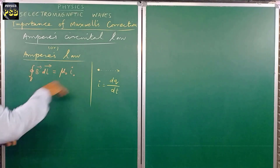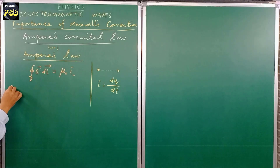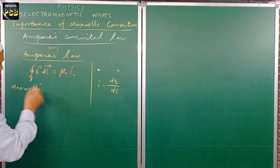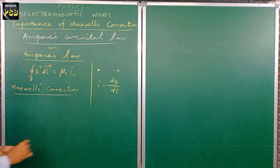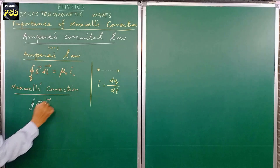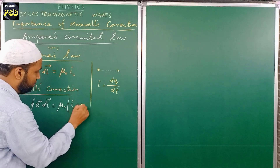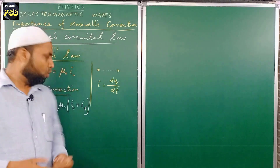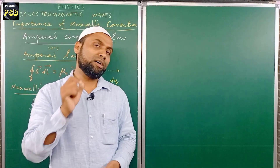This law was modified by Maxwell, and the modification is known as Maxwell's correction. Maxwell introduced a new term, replacing I-naught with I-c plus I-d, where I-c is the conduction current and I-d is the displacement current. Conduction current is the current which is produced when charges flow in a particular direction.